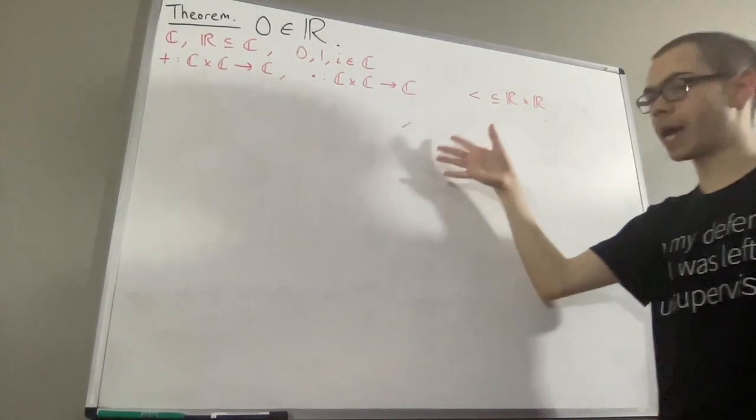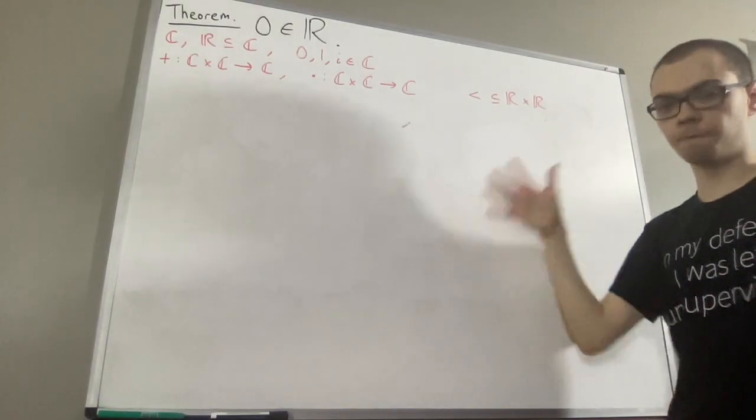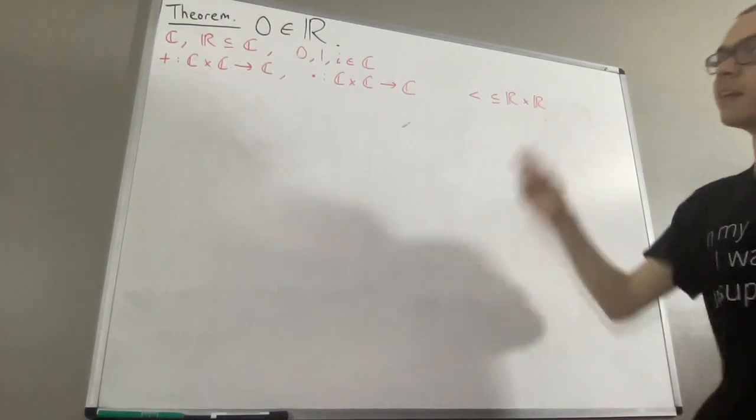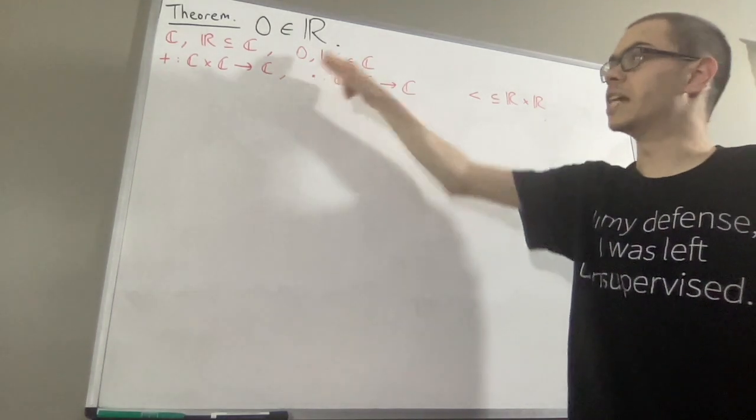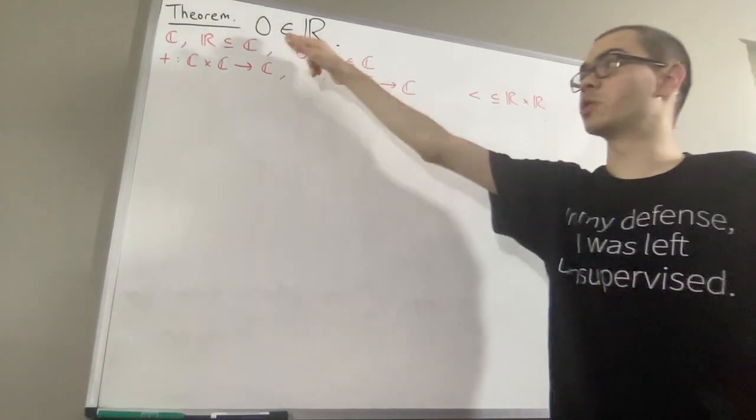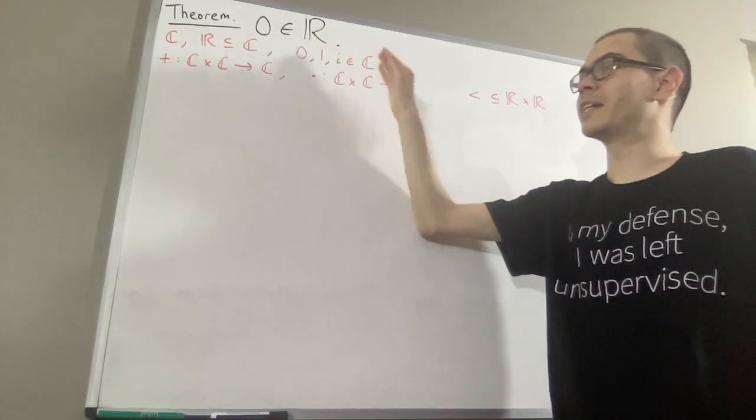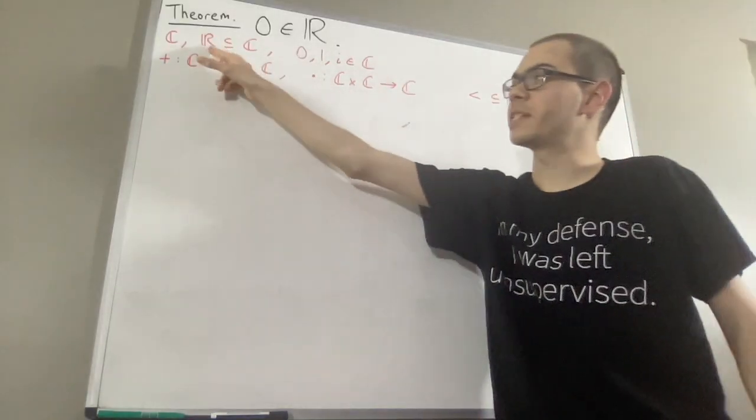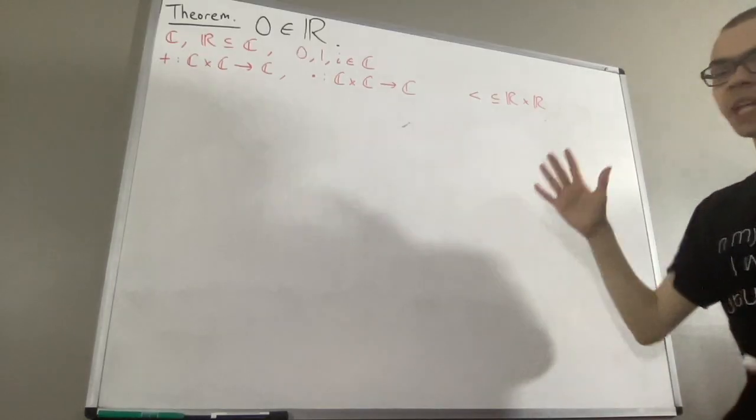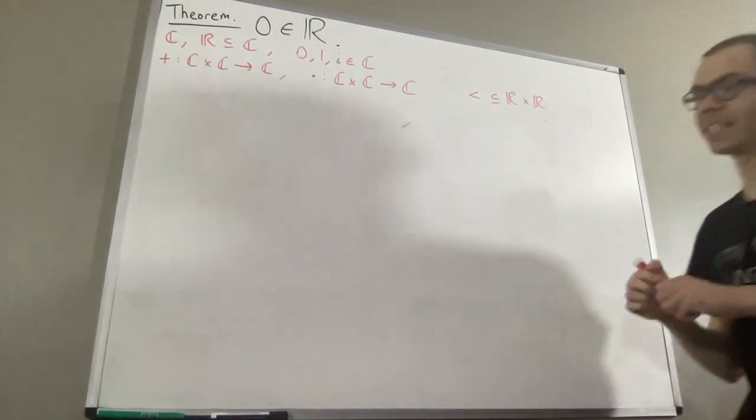And from here, we have a list of axioms for the complex numbers, which I'll leave in the description below. Now we know that 0 is a complex number. We're trying to prove that 0 is a real number. We're trying to prove that, in particular, it belongs to this subset of the complex numbers. And to prove that, we are going to be using the following axioms.